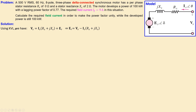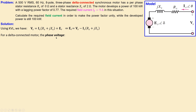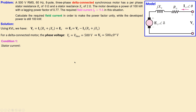This will be used for two conditions: the current condition and the second condition for the new field current. For a delta connected motor, the phase voltage is the same as the line voltage, so the phase voltage equals the line voltage, which is 500 volts RMS. We can convert that to phasor notation. Now let's look at condition one — starting with the stator current.